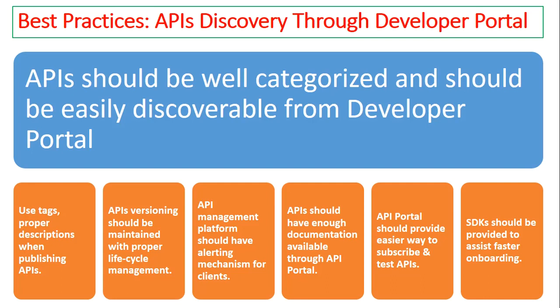The next important point for API discovery is that the API management platform should have a proper alerting management mechanism. Whenever any APIs are published, all potential clients and those already subscribed to that category of APIs should be alerted — through email or any mode of communication — so that they know a specific API or specific version has been published that is of their interest.